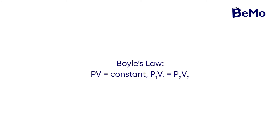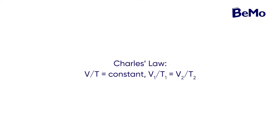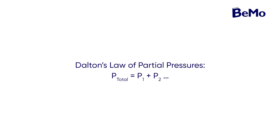Boyle's law allows you to calculate how the volume of a gas changes as pressure changes, and vice versa. Charles' law states that the volume of a gas is directly related to its temperature at constant pressure, allowing you to calculate how volume changes as temperature changes. Avogadro's law relates the volume of a gas to the number of moles within it — at constant temperature and pressure, a larger number of moles will take up a larger volume. Dalton's law states that the total pressure exerted by a gas mixture is the sum of the individual pressures exerted by each gas in the mixture.